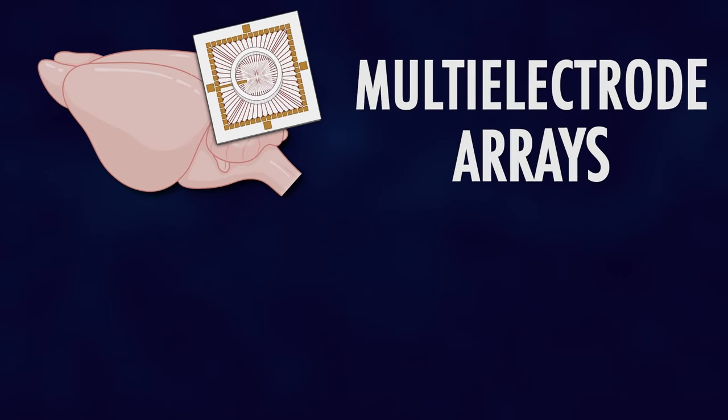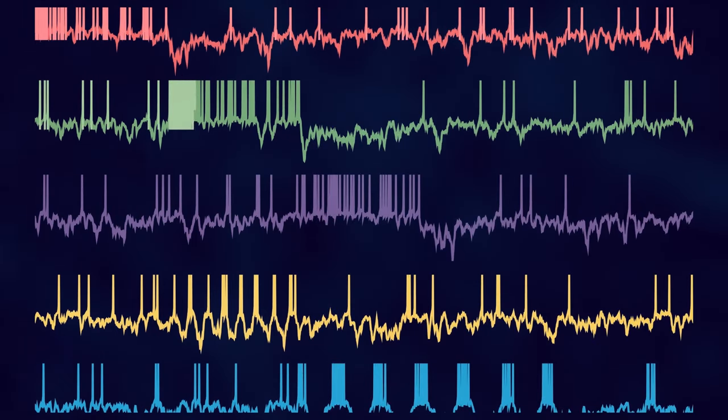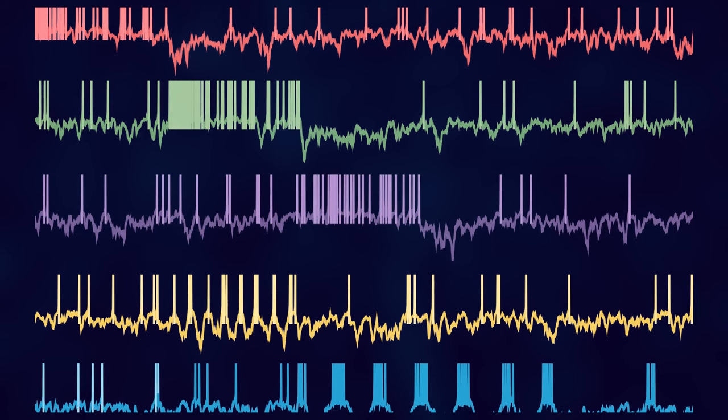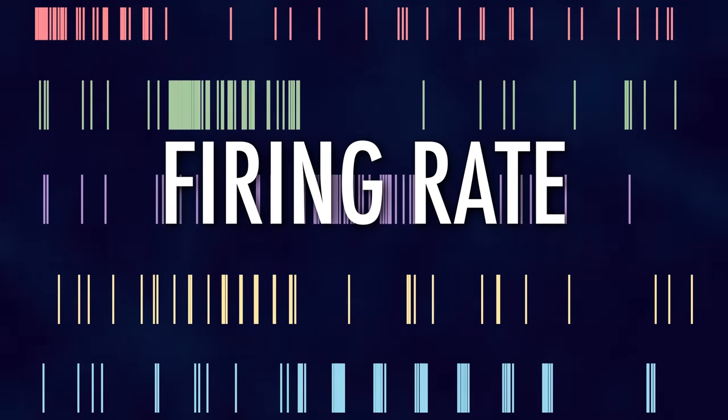For decades, scientists were able to eavesdrop on a single neuron by sticking a very thin electrode inside and measuring how the neuron's voltage varies with time, detecting when it spikes. But with that technique, we are able to record only from a handful of neurons at a time, which is not enough to unravel the secrets of their collective dynamics. Only with the recent advent of multi-electrode arrays can we now get information about up to a few hundred neurons in a single recording session. Knowing when each neuron produces a spike, we obtain what's known as the spike train.